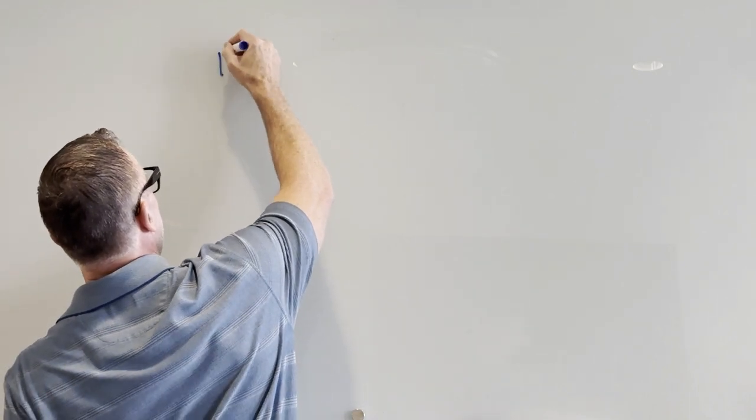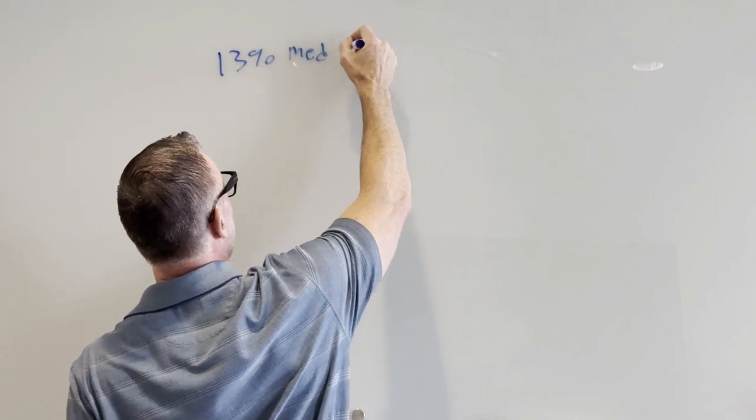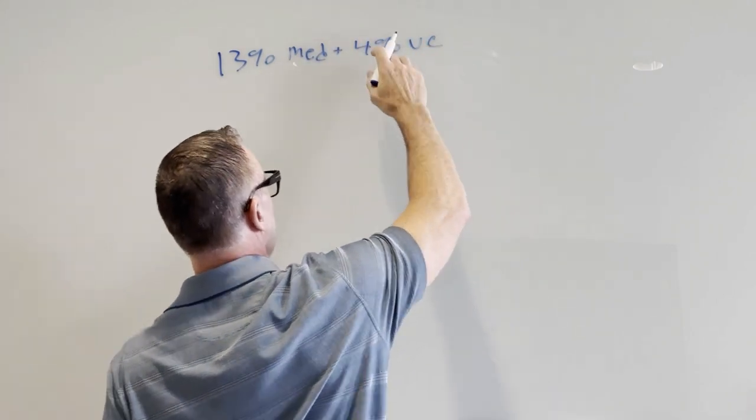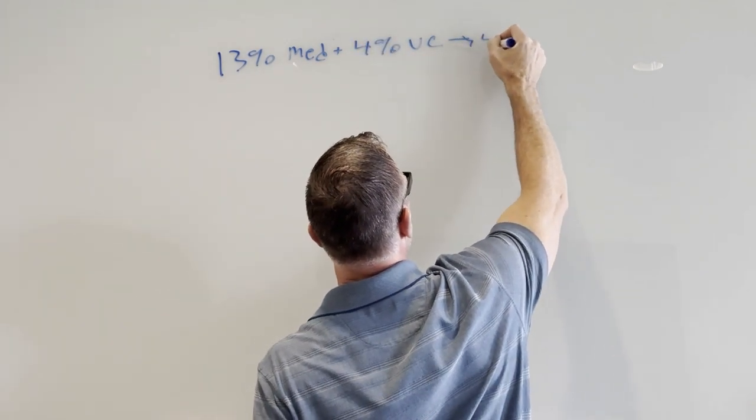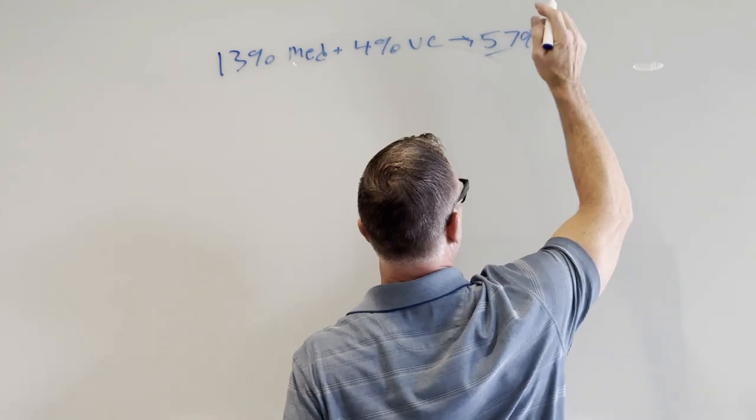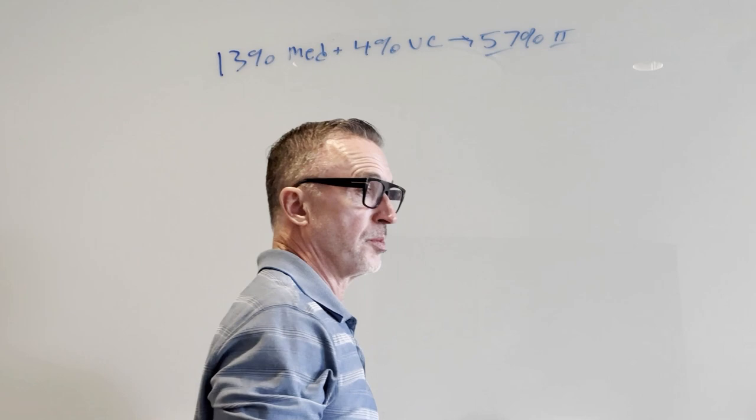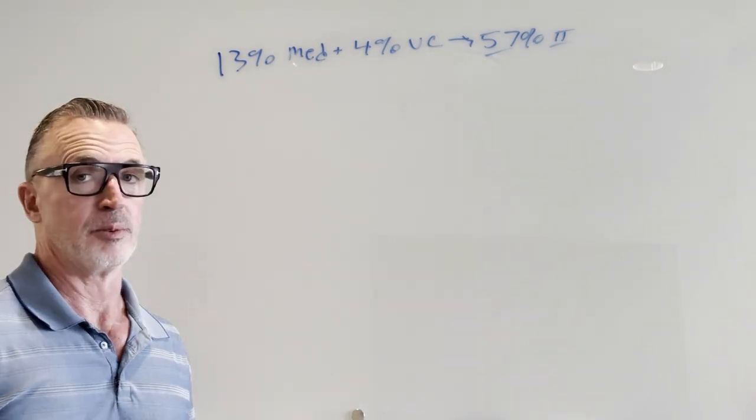The recap was we're paying a 13% tax, if you will, to Medicare. We're paying another 4% tax to uncompensated care. These are the folks that can't afford it. In the end, we paid and we demonstrated that we paid a 57% on average, 57% profit margin for the hospital groups. So if that's not motivation, you probably don't want to be watching this.